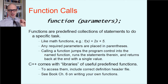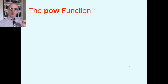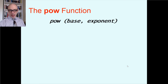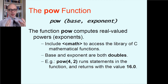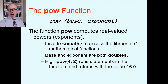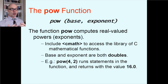Here's a quick example of a function you might want to call: the pow function, short for power or exponent. The name of this function is pow — it's a very old function, named short in those days. Inside the parentheses, it takes two parameters: the first is the base and the second is the exponent. The pow function computes real-valued powers. This function is in the cmath library — the math library originally written for the C language — where all your interesting mathematical functions are.